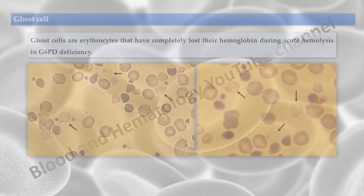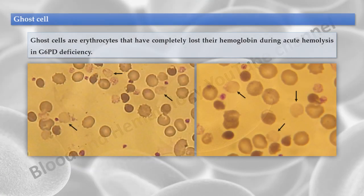Ghost cells are erythrocytes that have completely lost their hemoglobin during acute hemolysis in glucose-6-phosphate dehydrogenase deficiency.